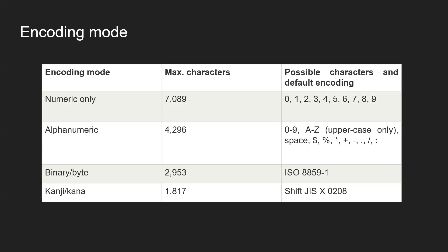The data is encoded and then a QR code is generated for it. There are different encoding modes: numeric only, where possible characters are 0 to 9 and the maximum encodable characters is 7089. There are also alphanumeric, binary, and Kanji or Kana encoding modes — Kanji being a Japanese script. These are the different types of encoding modes used to encode data into a QR code.